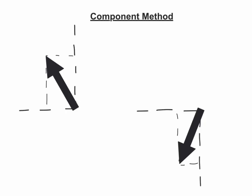The most important thing you can do in the component method is draw your dashed box correctly. So by doing this box around the vector, we're trying to show exactly how high up the vector goes and also how far sideways it goes. This is going to allow us to draw the arrows much easier.